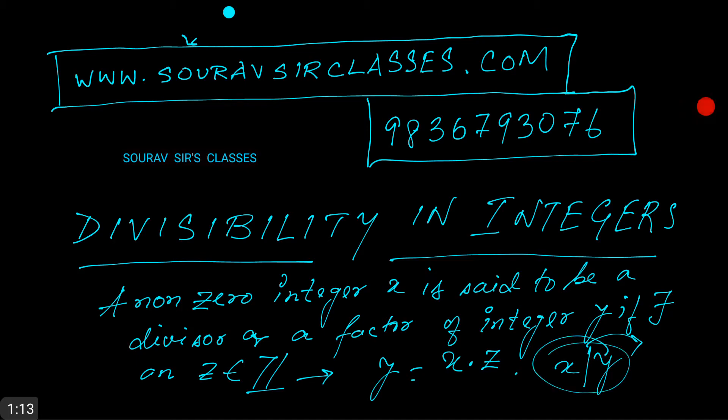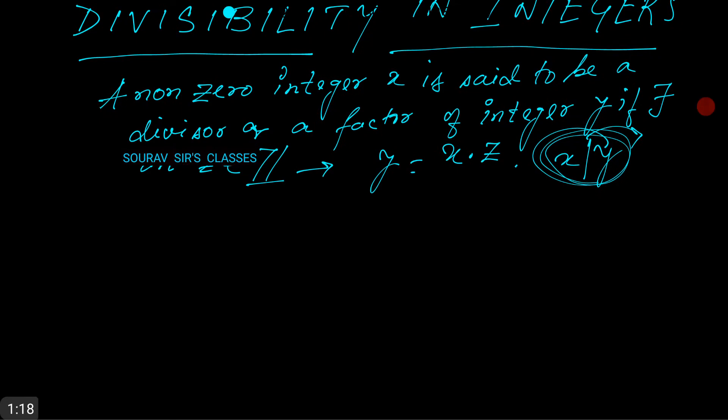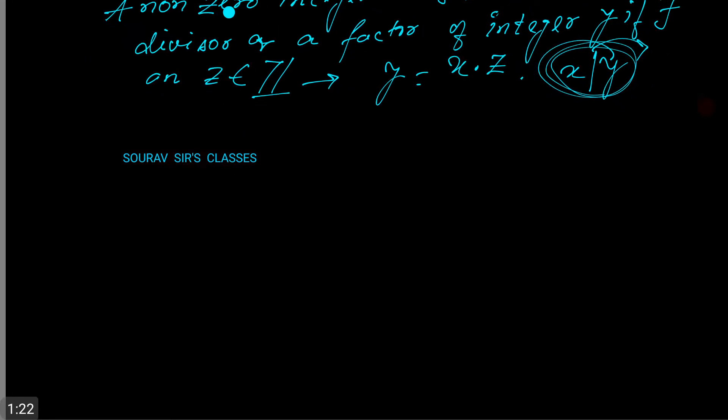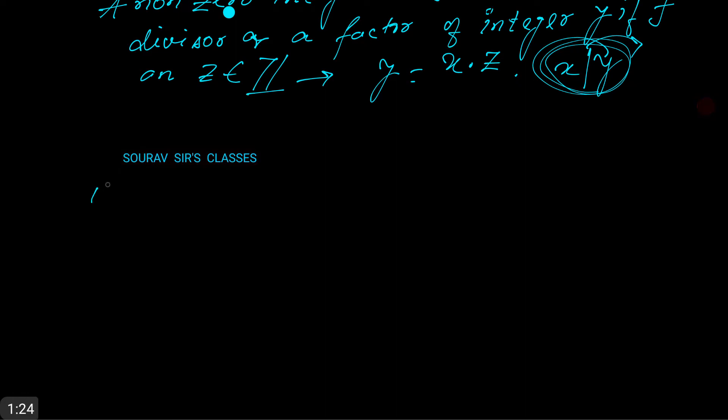Now let's just go and call in some theorems on divisibility. The first theorem states that if a divides b and b divides c, then a divides c. The second theorem states if a divides b, then a divides bc for any c belonging to the integral domain.